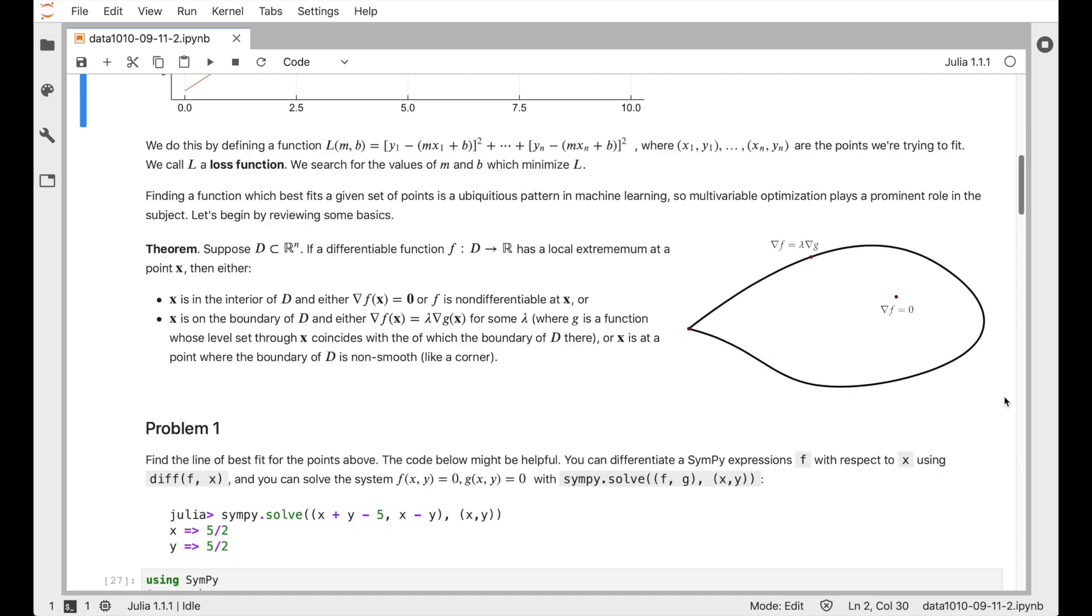So the main optimization theorem for multivariable calculus, this theorem really sort of combined a few different ideas from a multivariable calculus class. But essentially, the point is that if you have a differentiable function that has a local extremum at a point, then at a point where the extremum is inside the domain, the gradient is zero.